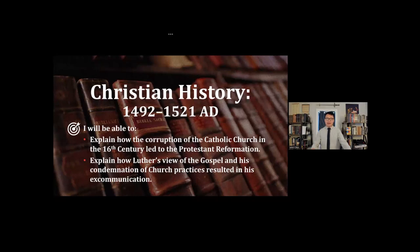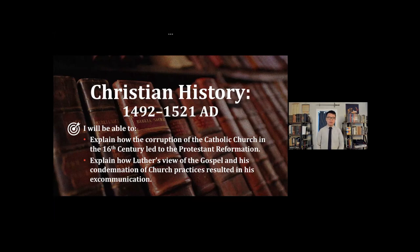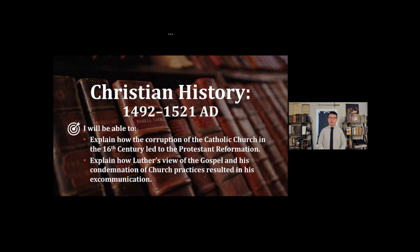Hello, and welcome to the 14th episode of the Christian History mini-lecture series. Today, we're going to be discussing a period of history spanning from 1492 through 1521 AD. We have a couple objectives for today. Firstly, you'll be able to explain how the corruption of the Catholic Church in the 16th century led to the Protestant Reformation. And secondly, you'll be able to explain how Luther's view of the gospel and his condemnation of church practices resulted in his excommunication.